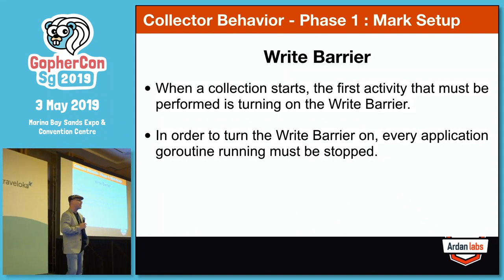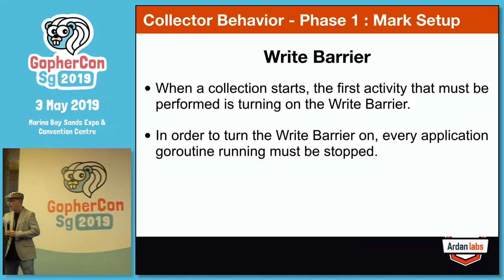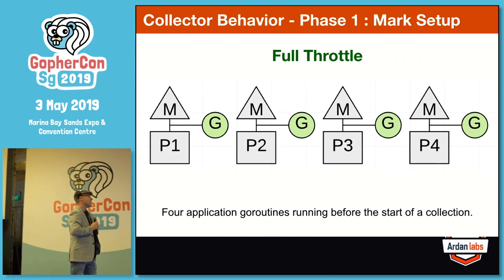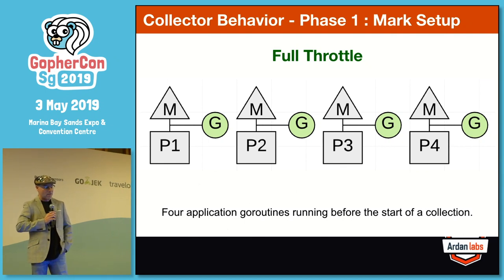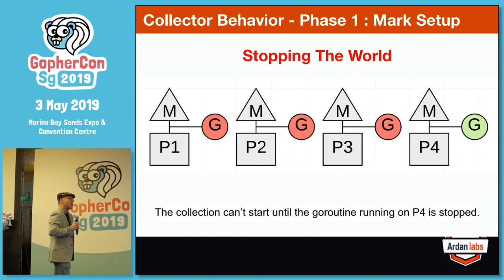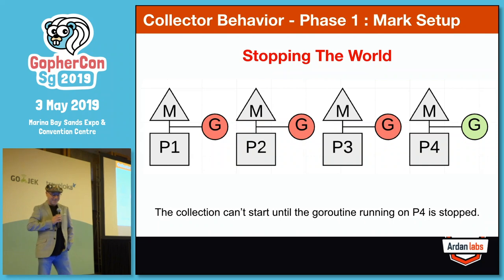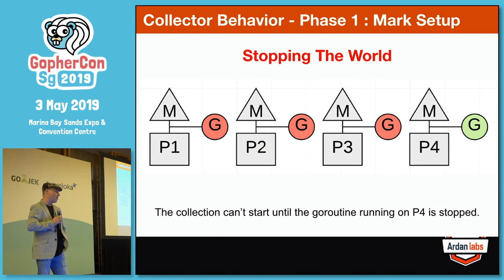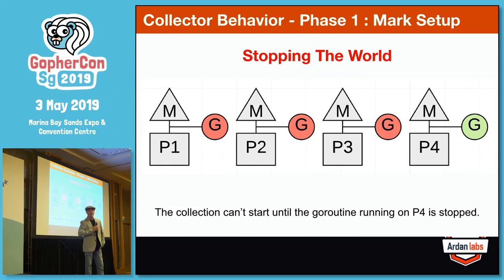We've got to turn this write barrier on as part of mark setup. Imagine we're running on a four-threaded Go program — that's our CPU capacity, four threads that can run four goroutines in parallel. To turn the write barrier on, we have to stop every single goroutine from running. It's going to be very very quick, but we have to do it. The only way that can happen is when the goroutines find themselves in a safe point, and right now that safe point only occurs when we're inside of a function call.